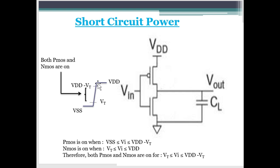So between this period from VT to VDD-VT both PMOS and NMOS are ON. That is during this time there is a direct current flow from VDD to GND. This direct current flow from VDD to GND leads to short circuit current and which leads to short circuit power.